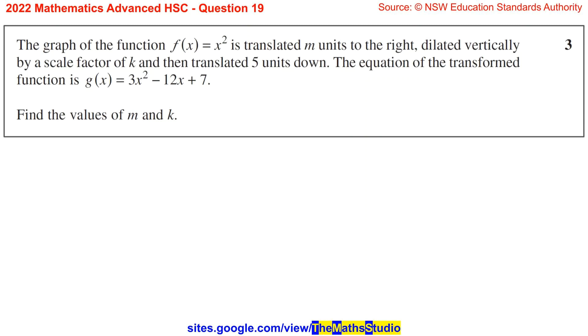Question 19: The graph of the function f of x equals x squared is translated m units to the right, dilated vertically by a scale factor of k, and then translated 5 units down. The equation of the transformed function is g of x equals 3x squared minus 12x plus 7. Find the values of m and k.